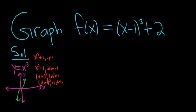So in this particular example, we're subtracting 1 from the x, as you can see here. So we think it's left, but no, it's right. It's backwards. And then we're adding 2 to the entire function, so we're going to go up by 2.